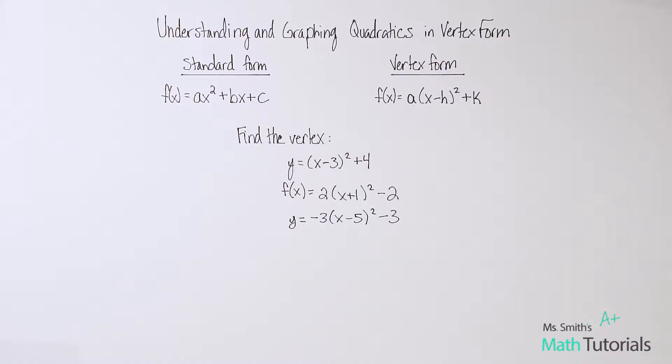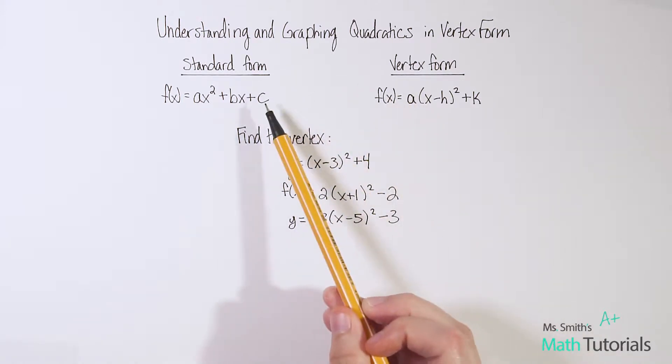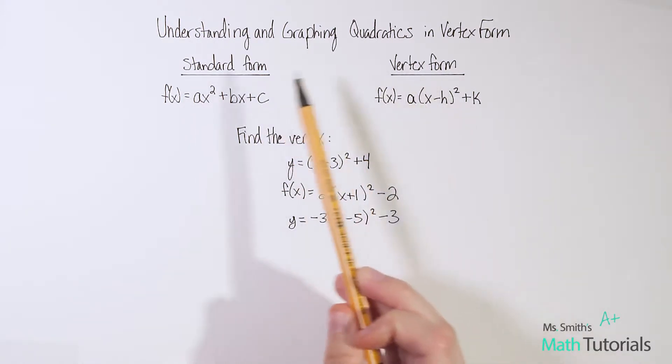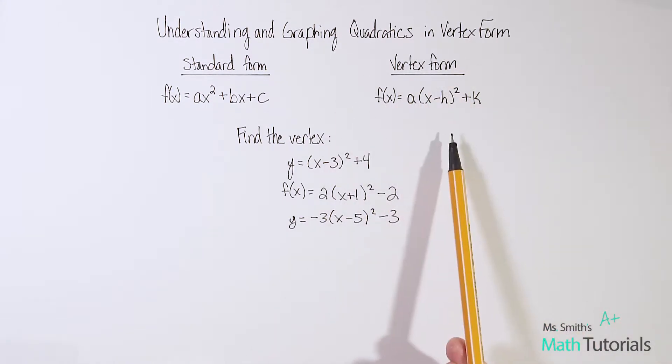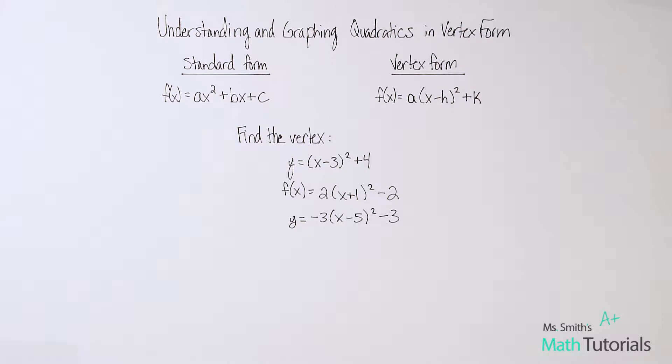In this video we're going to be talking about understanding and graphing quadratics in vertex form. This video is just going to be purely based on understanding what is the vertex when you're given a vertex form. How do we find it? And then also just giving an example of how would we then graph it. In a future video I'm going to talk about translating from vertex form to standard form. That'll be in a separate video.